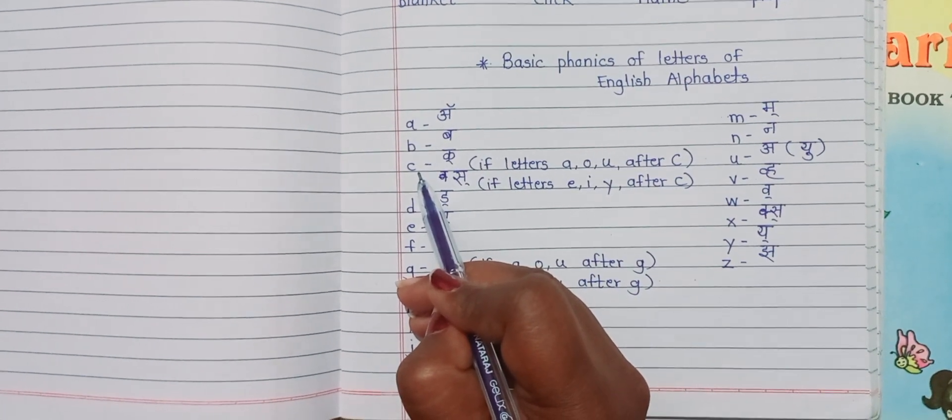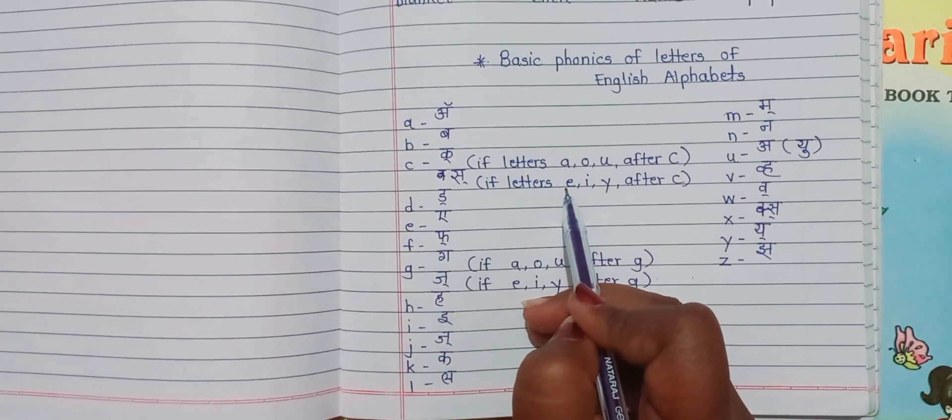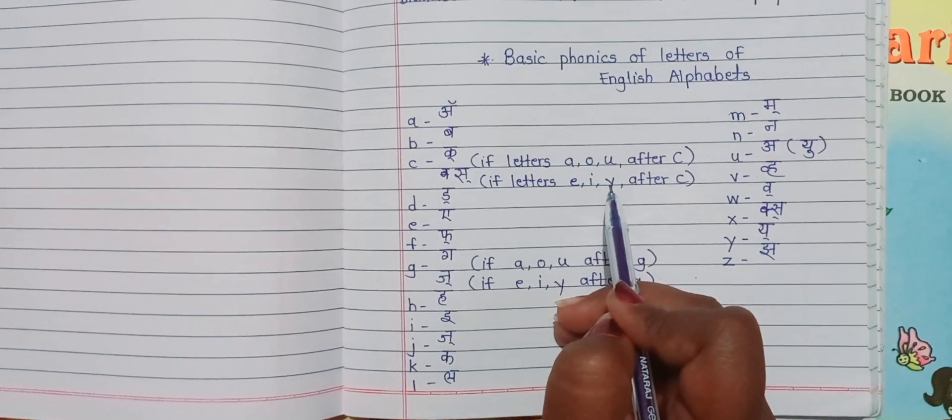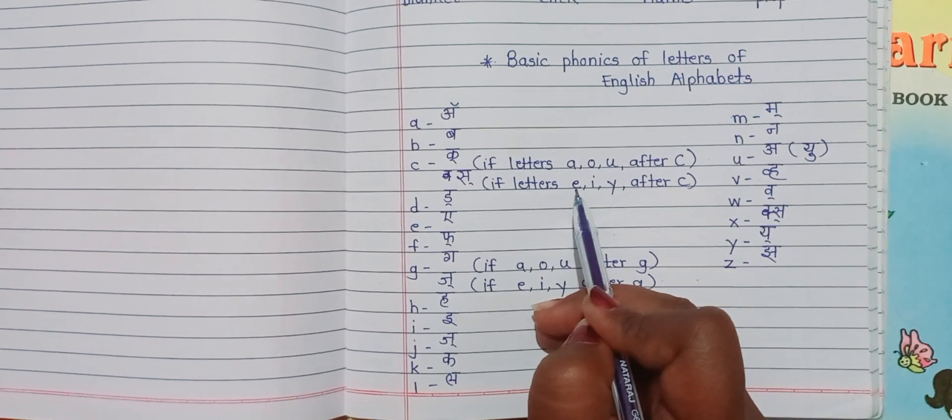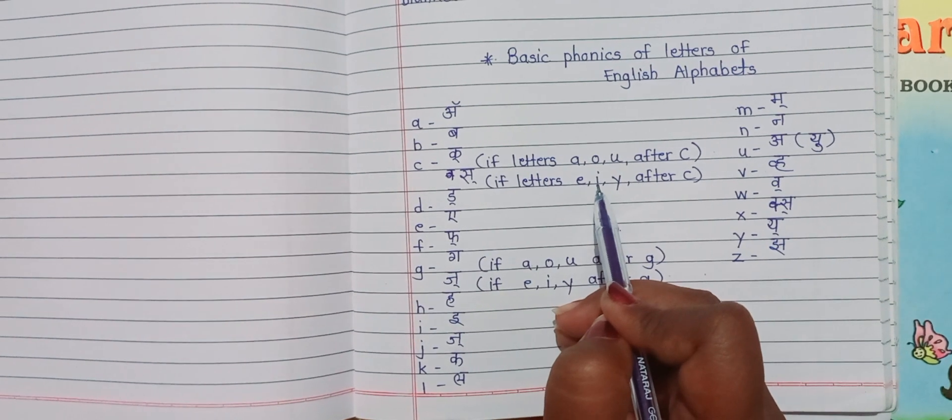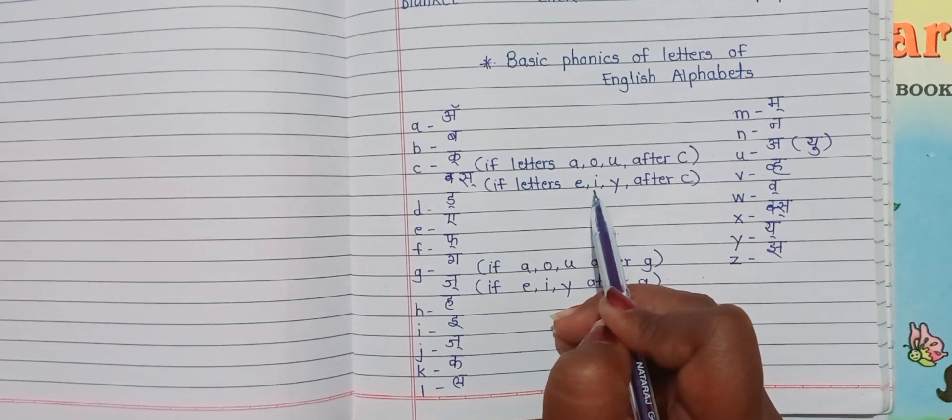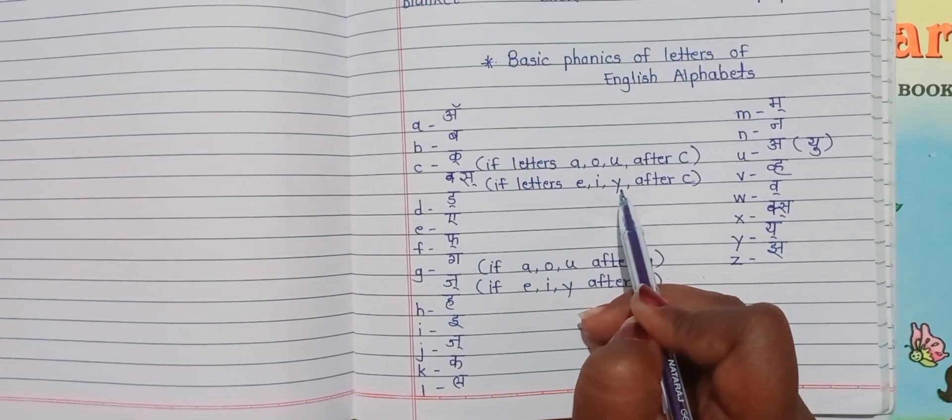C also pronounces as S if it is followed by the letters E, I and Y. Like, C-E-M-E-N-T, cement. C-I-N-D-R-E-double-L-A, Cinderella. C-Y-C-L-E, cycle.